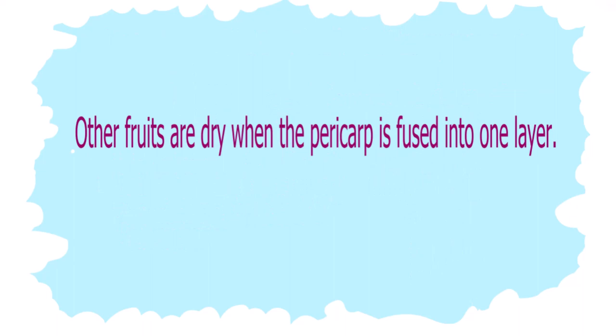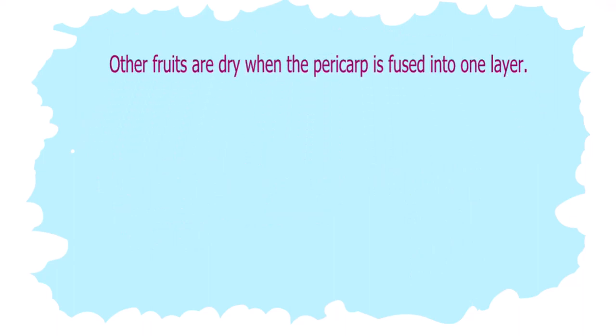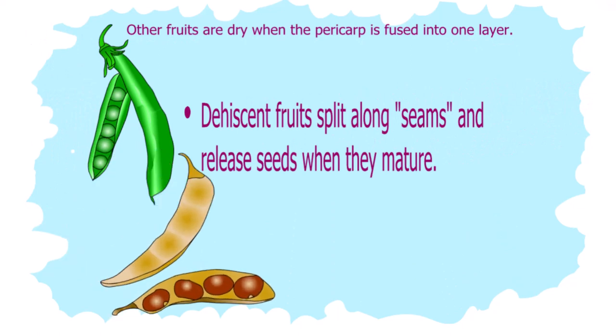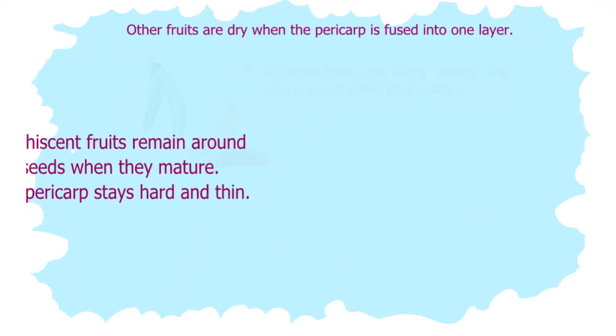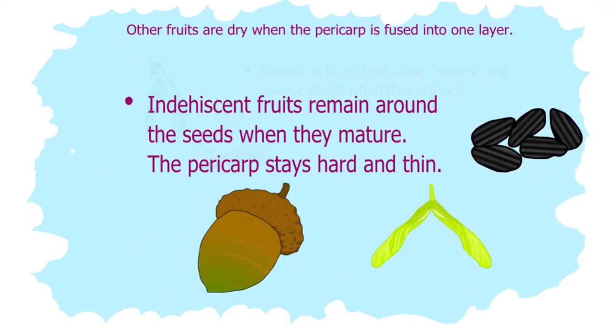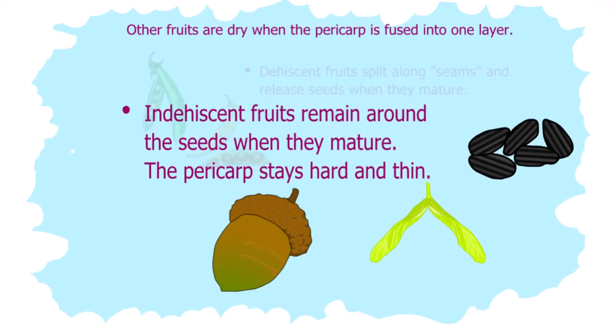Other fruits are dry, where the pericarp is fused into one layer. Dehiscent fruits split along seams and release seeds when they mature. Indehiscent fruits remain around the seeds when they mature — the pericarp stays hard and thin.